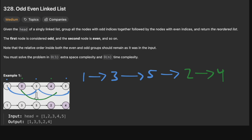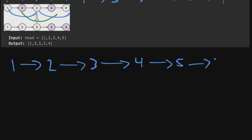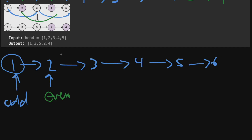Now how do we actually solve this? We're going to do essentially what we saw in the example, but let's use a six-element list: 1→2→3→4→5→6. The first odd is at the head, so we have a pointer at the odd value and we know the next one is even. We loop through the entire linked list with two pointers — one for odd, one for even. For the odd pointer, we want to skip the even node and jump to the next odd.